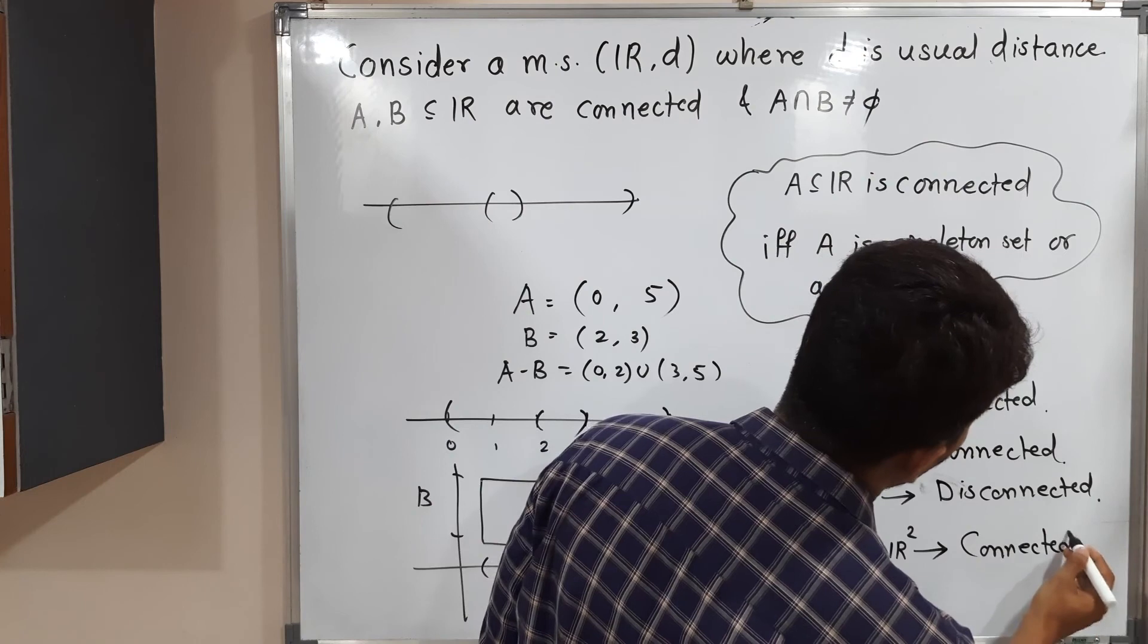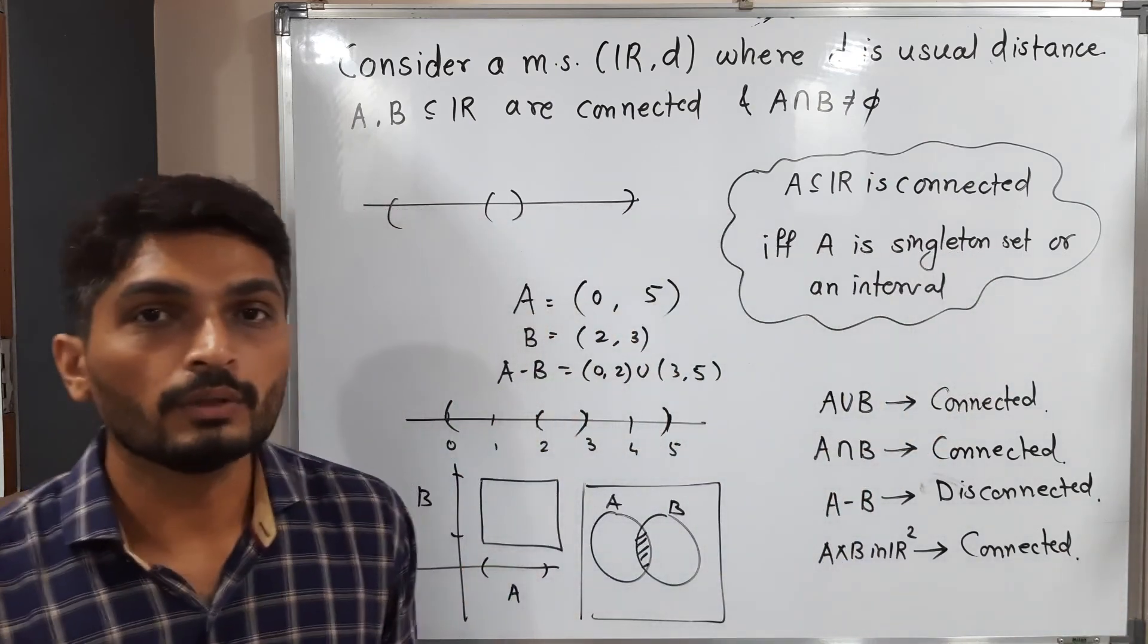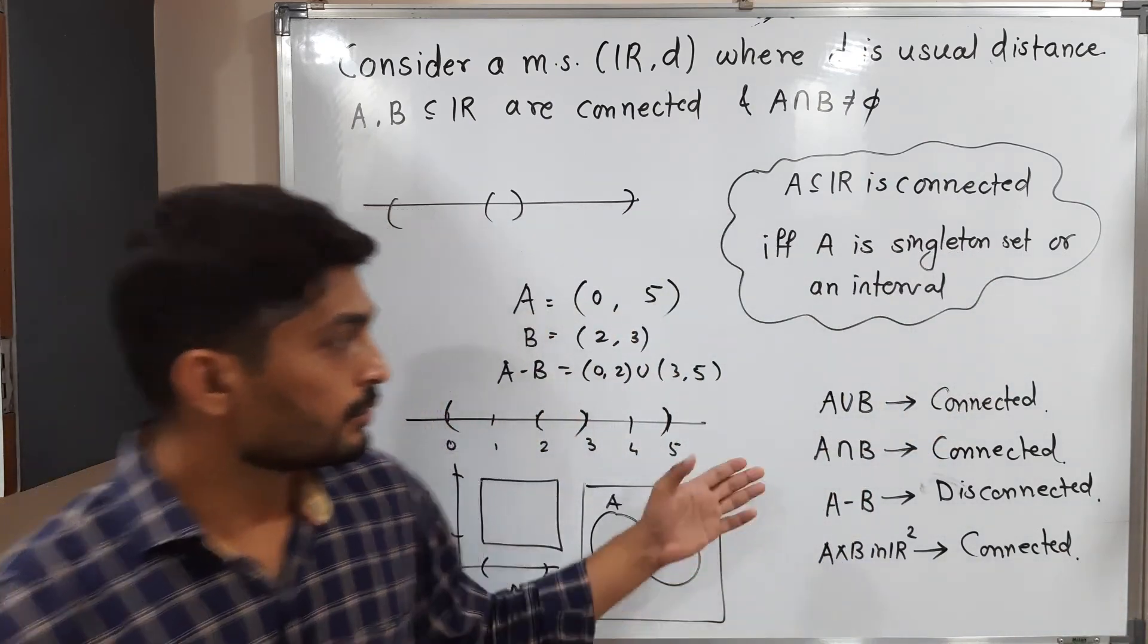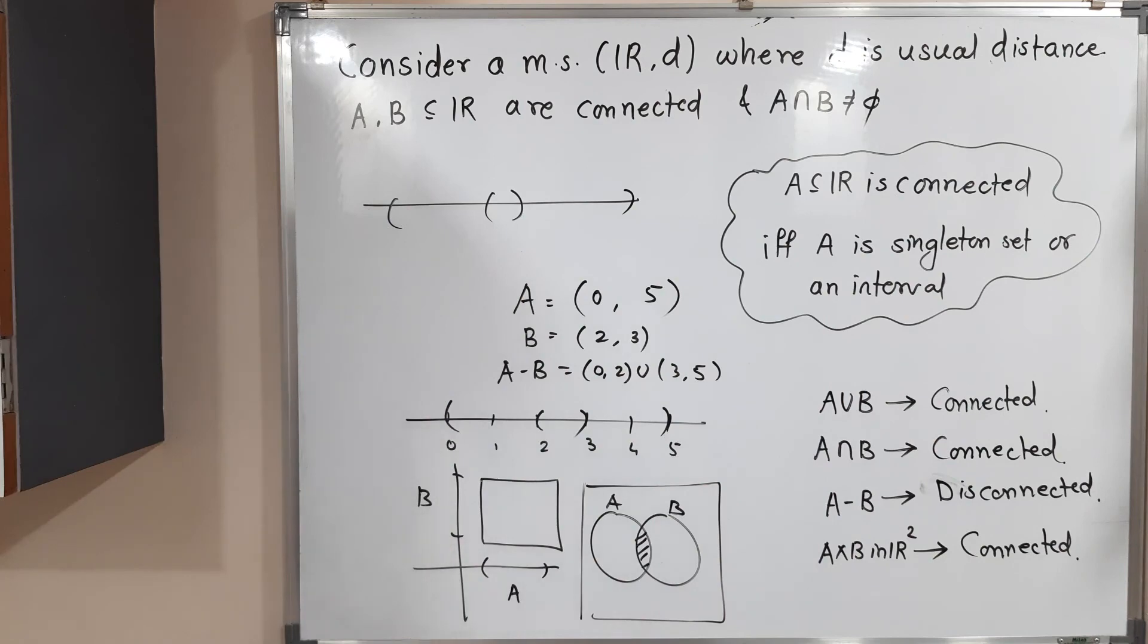There are different ways to prove it. That rectangle in R2 is a connected set. So these are our conclusions. You can make a screenshot of it. Thank you. Bye-bye.